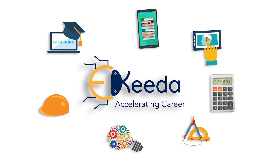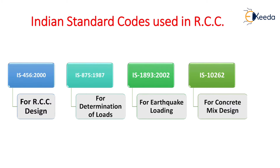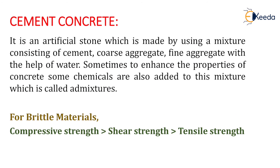The first one is IS 456:2000, used for RCC design. The second one is IS 875:1987, used for determination of loads — that is live load, dead load, and snow load. The third one is IS 1893:2002 for earthquake loading. IS 10262 is used for concrete mix design.